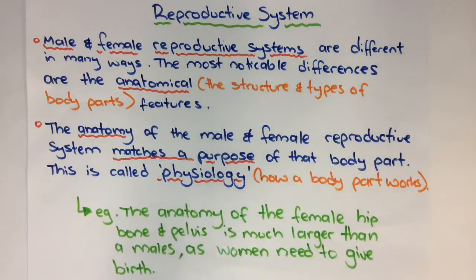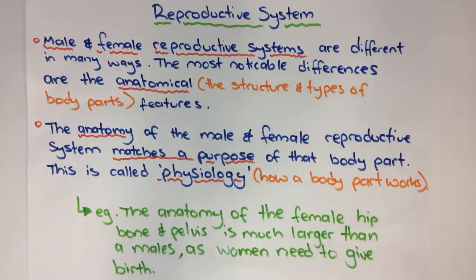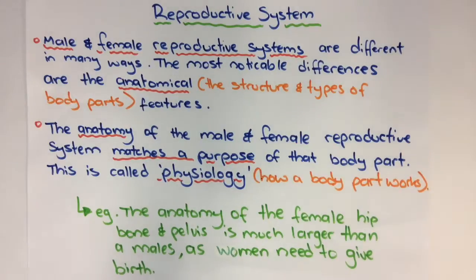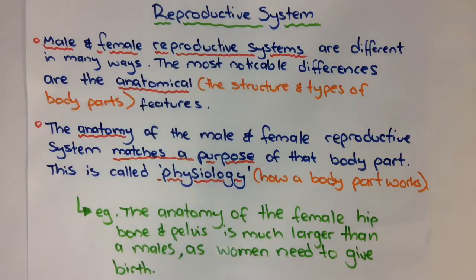The male and female reproductive systems are quite similar and different in a number of ways. The most noticeable differences are the anatomical features, or the structures and types of body parts. Two words you need to be very clear on are anatomy and physiology — anatomy is the structure and physiology is the function of a particular body part.